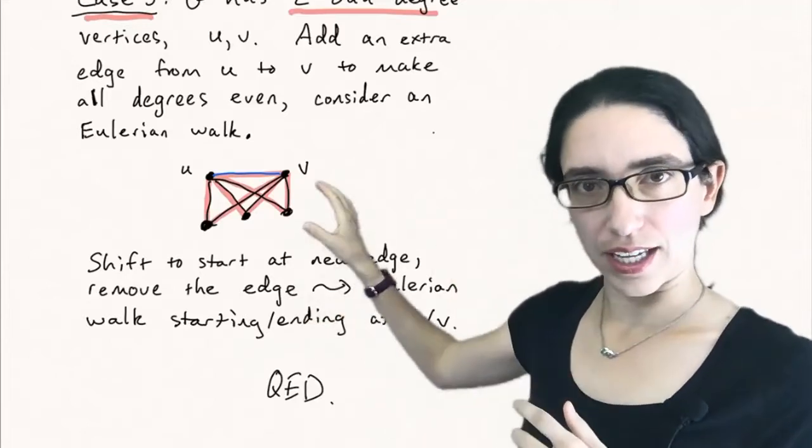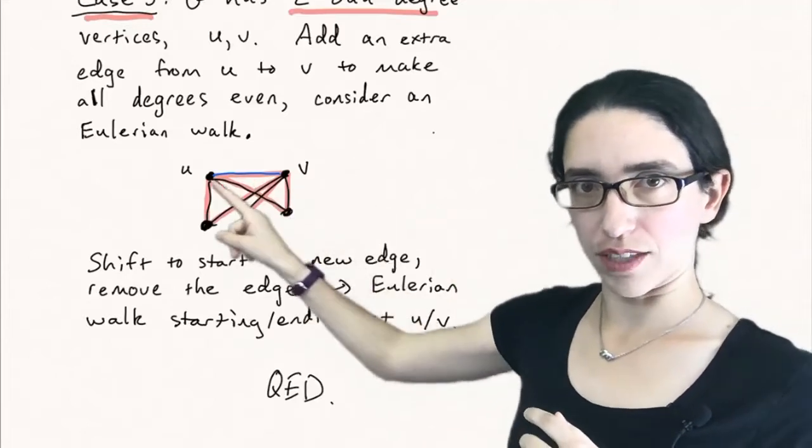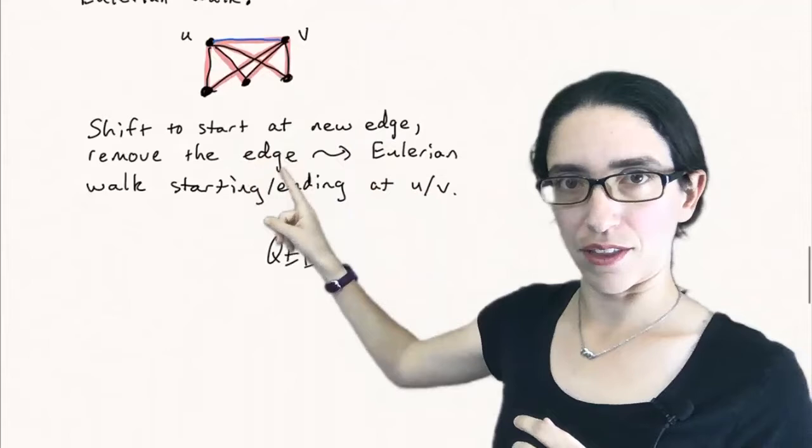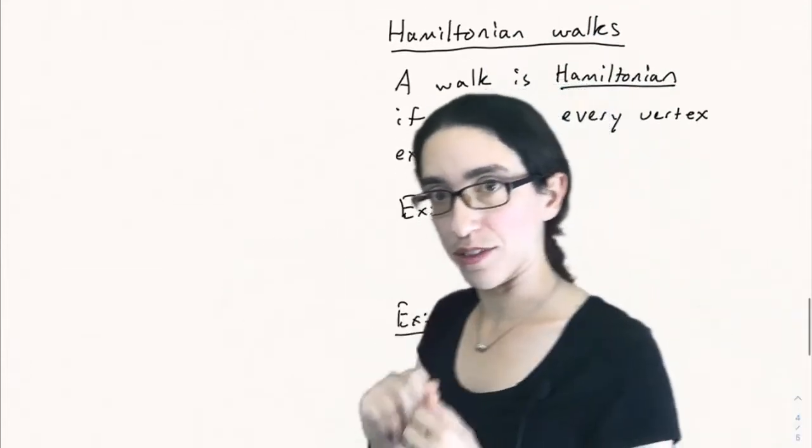So what we've shown actually is that if you have two vertices of odd degree, like U and V had degree three, then you have to start and end at those odd degree vertices.